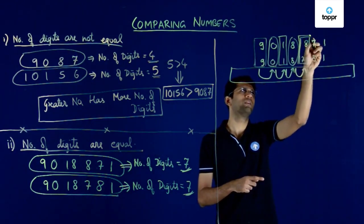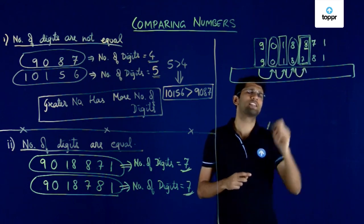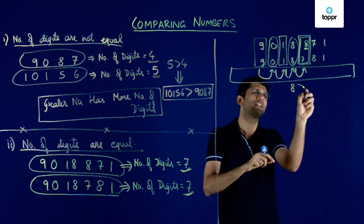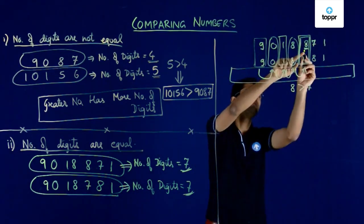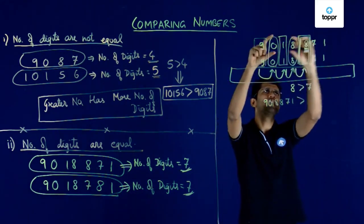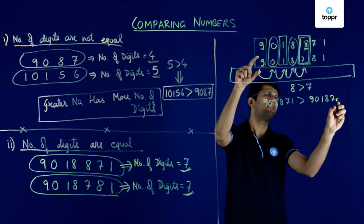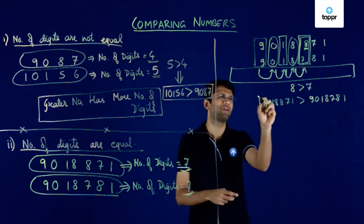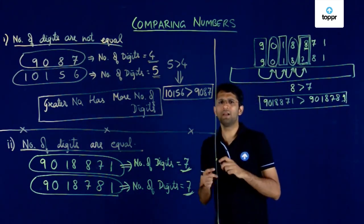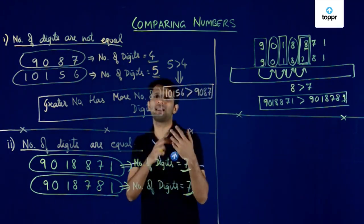For the first time we have found that the digits in the two numbers are different. Because the digits are different, we simply compare these two digits: the number with the larger digit is the greater number. Here 8 is greater than 7, so the first number 9018871 is greater than the second number 9018781. The general method: first look at the number of digits — if unequal, the number with more digits is greater.